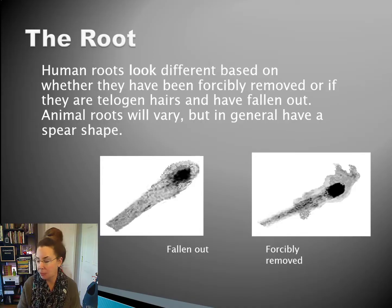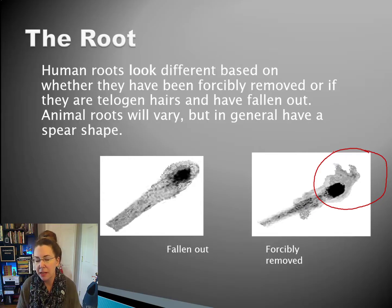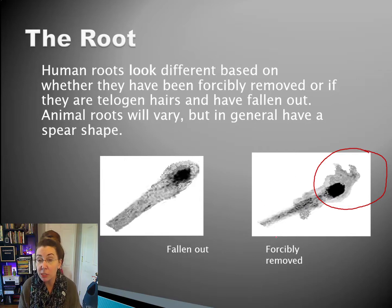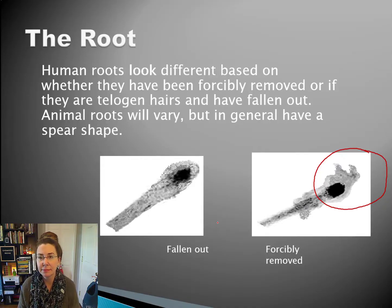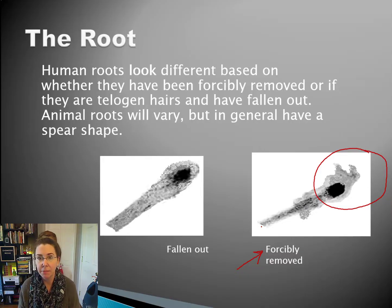If we find hairs that have been forcibly removed, where we can see segments of the follicle tissue on them, that tells us something very different. If we find a large number of forcibly removed hairs, that means in general we have some type of violence that happened at the scene of that crime, because hairs don't get ripped out on their own.